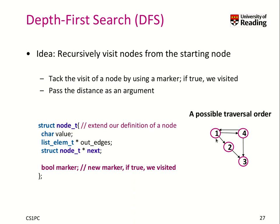Let's have a look at the possible traversal order in this graph. When we start at node 1, we can go to 2, then we can go to 3. Now we have to backtrack to 2, to 1, then we go to 4. We try to explore as deep as possible first, and if we can't, we backtrack.